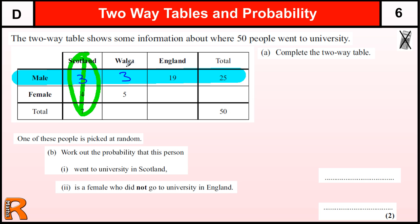That allows us to calculate the Wales column — three and five makes eight. That allows us to calculate the totals across the bottom. I could do this total here, which is 25, which then allows me to do the females. Or I could do this total here, which is 15 for seven and eight, and therefore we need 35 on top of that to make 50. This missing value — four and five makes nine, so we'd have 16, and 19 plus 16 is 35.